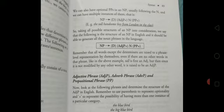From London in the class is the prepositional phrase. The tall handsome boy from London in the class. Boy is the head of the noun phrase. Handsome is more information, and tall as well. So taking all possible structures of NP into consideration, we say that the following is the structure of NP in English, and it should be able to generate all the noun phrases in the language.